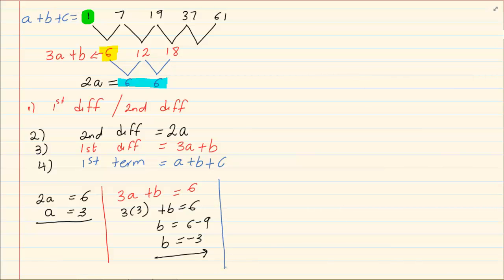Now remember you are solving for the unknown. So we have that a plus b plus c is equal to 1. You already have a, it's 3. You already have b, it's minus 3.